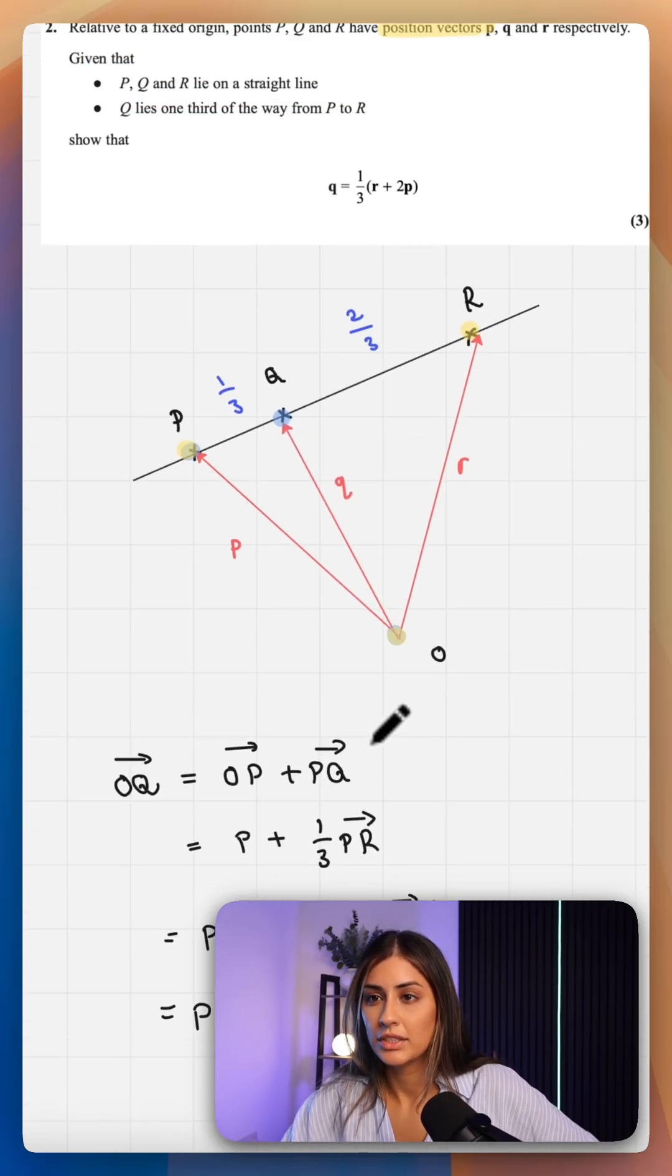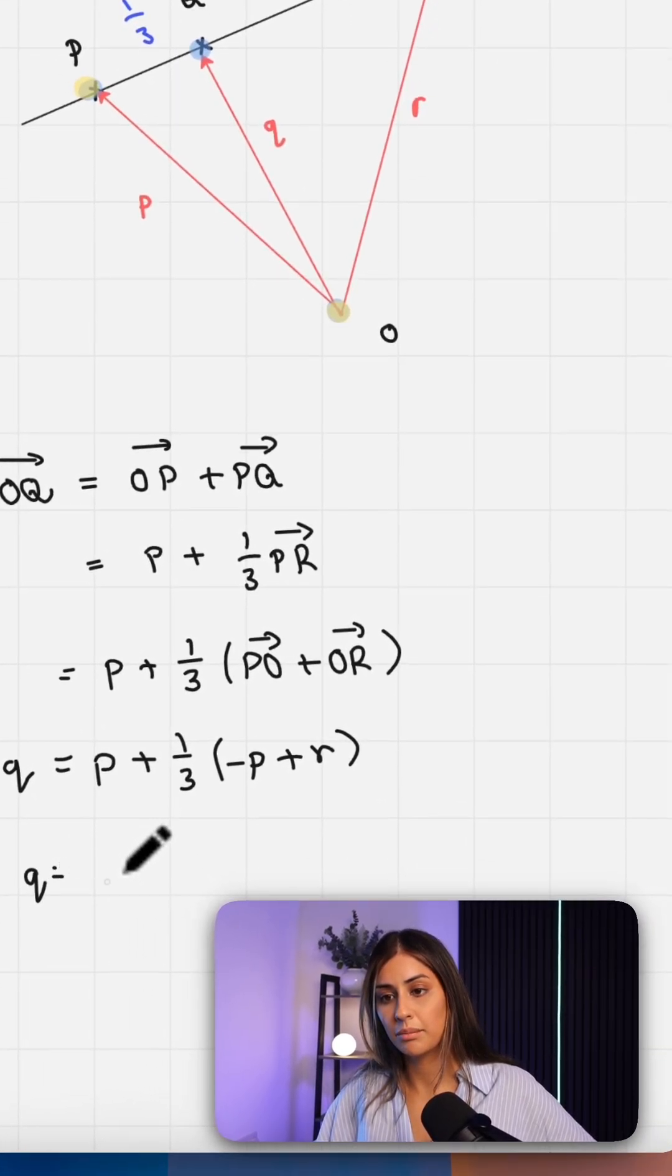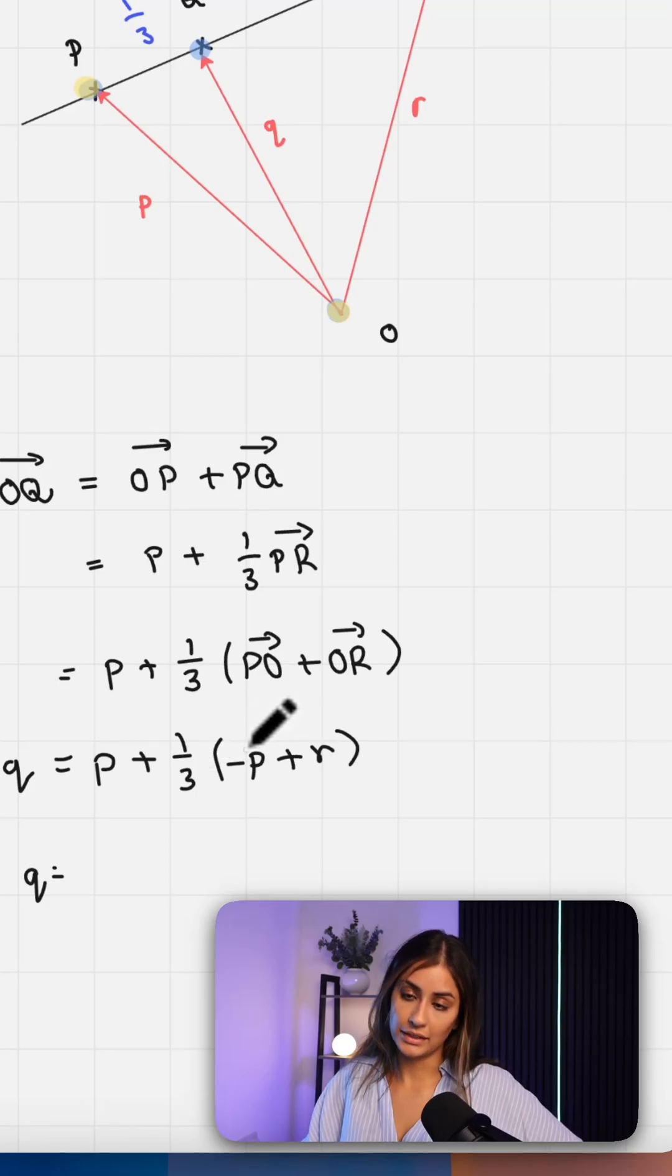And then I think we just need to simplify now to make Q the subject. So O to Q is Q. Let's plug that in. Q equals P plus a third times minus P.